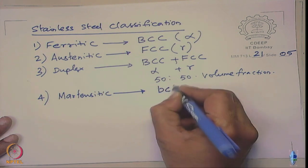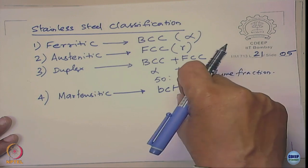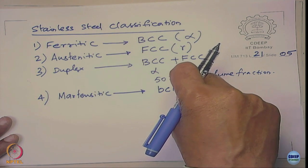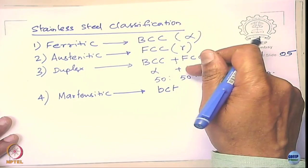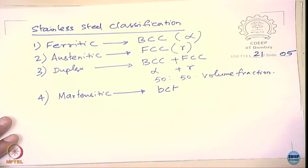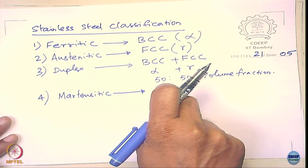The martensitic stainless steel is like any other martensitic steel, except it has chromium. The main purpose is to have high strength and good mechanical properties combined with reasonable corrosion resistance — better than plain martensitic steel but not as good as ferritic, austenitic, or duplex. You would not apply martensitic stainless steel where austenitic is used for chemical process industries, but it is a good compromise between austenitic stainless steel and martensitic steel.